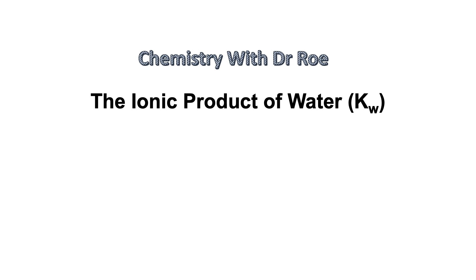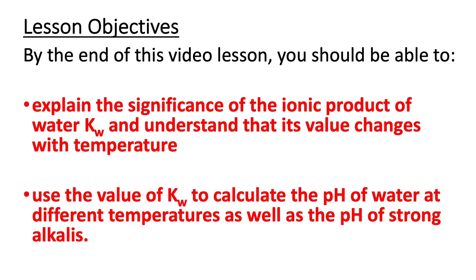Welcome to our latest video on the ionic product of water, Kw. This video is suitable for A-level students. By the end of this video lesson, you should be able to explain the significance of the ionic product of water, Kw, and understand that its value changes with temperature. You should also be able to use the value of Kw to calculate the pH of water at different temperatures, as well as the pH of strong alkalis.